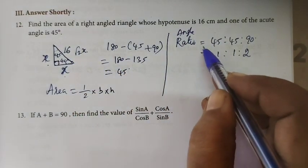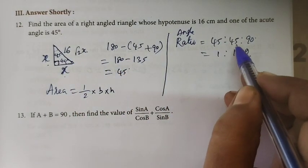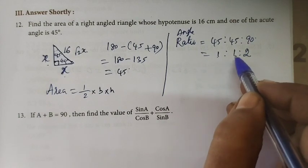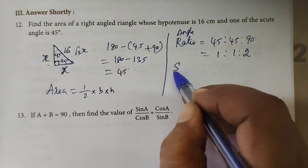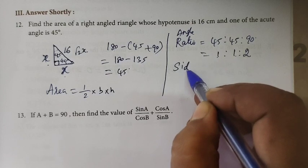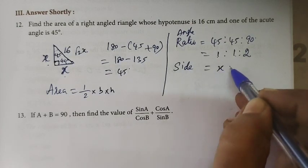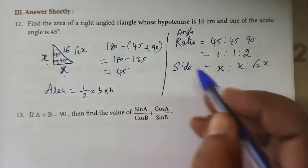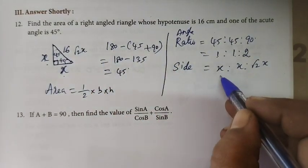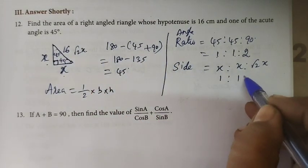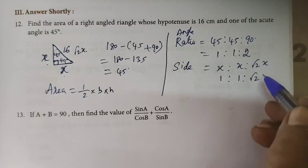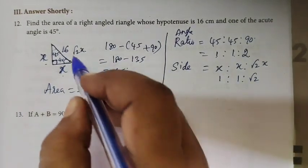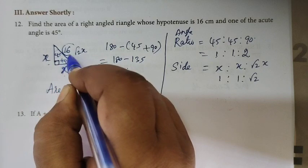If you have a right angle triangle with angles 45, 45, 90, the ratio of the sides is 1:1:√2. So the sides are x, x, and root 2x. Now, root 2x is equal to 16.